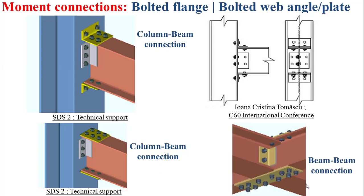It is also worth noting that this type of moment connection can be carried out between a primary beam as child member and a secondary beam as parent member, almost in the same way as for the beam-column connection, as depicted in the figure at the bottom right of this slide.